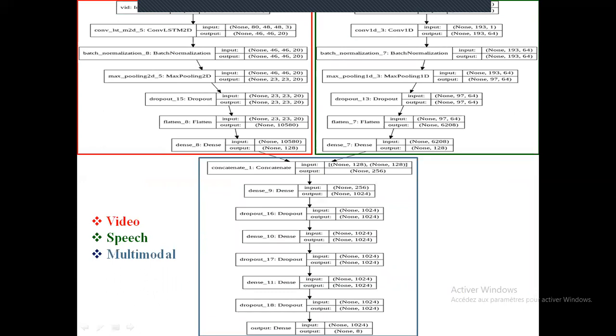Here is the proposed architecture. As I said before, the red part is the video part so it has a convolutional LSTM as an input layer followed by batch normalization, max pooling, dropout, flatten, and a fully connected layer. On the other side we have in green the speech subnetwork which consists of one-dimensional convolutional layer followed by the same layers: batch normalization, max pooling, dropout, flatten, and dense. They are joined here in the concatenation layer to perform feature fusion. Then we have three fully connected layers each one followed by a dropout layer, and finally the classification layer which is also a fully connected layer that classifies each video into one of the eight categories of emotions.